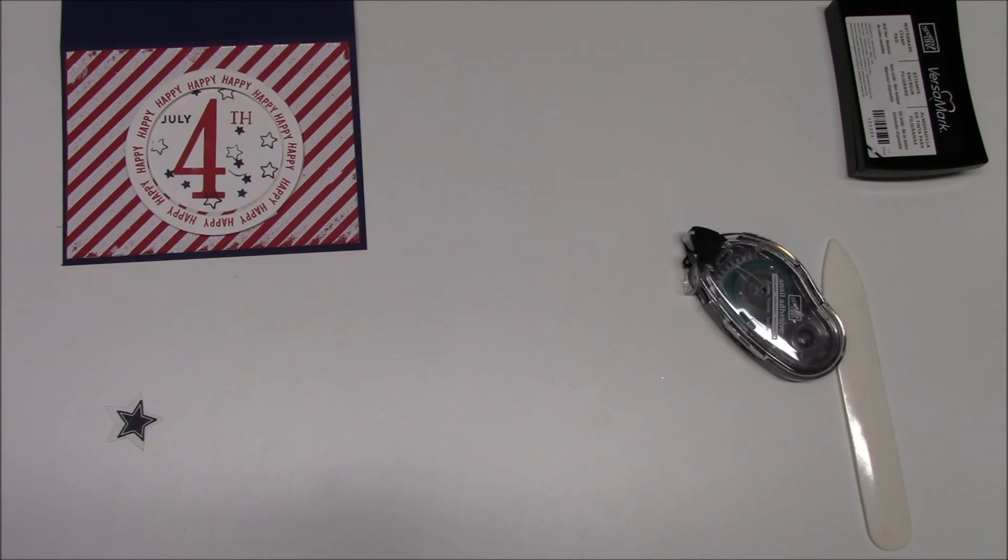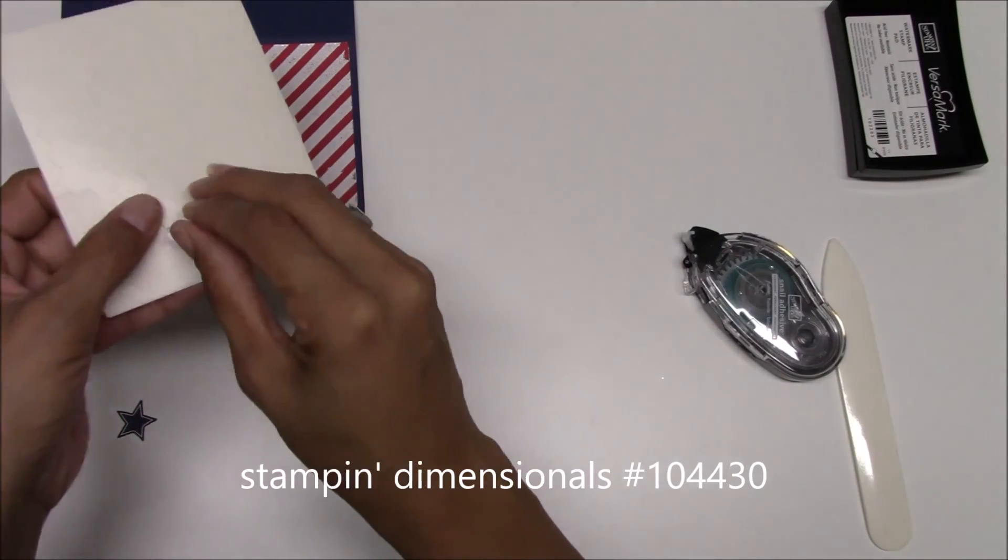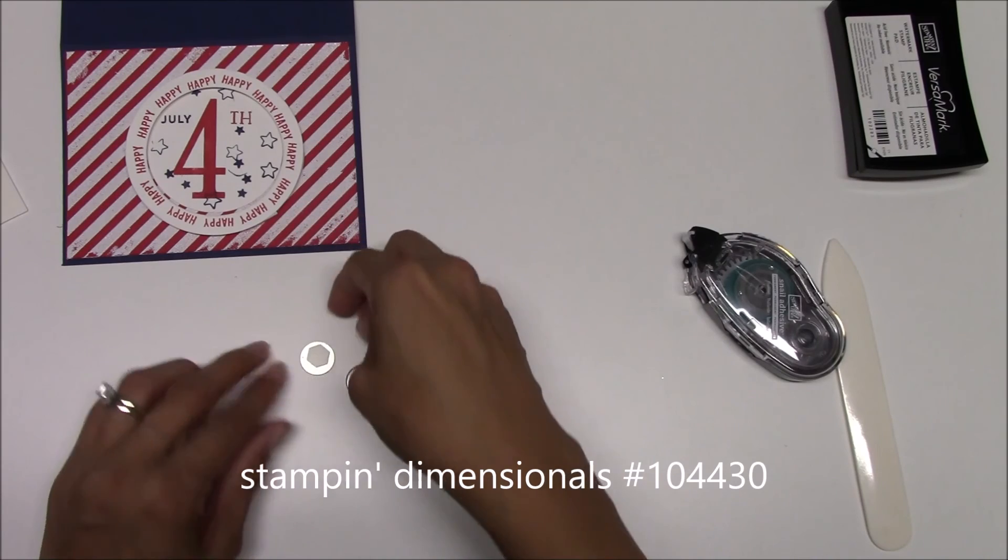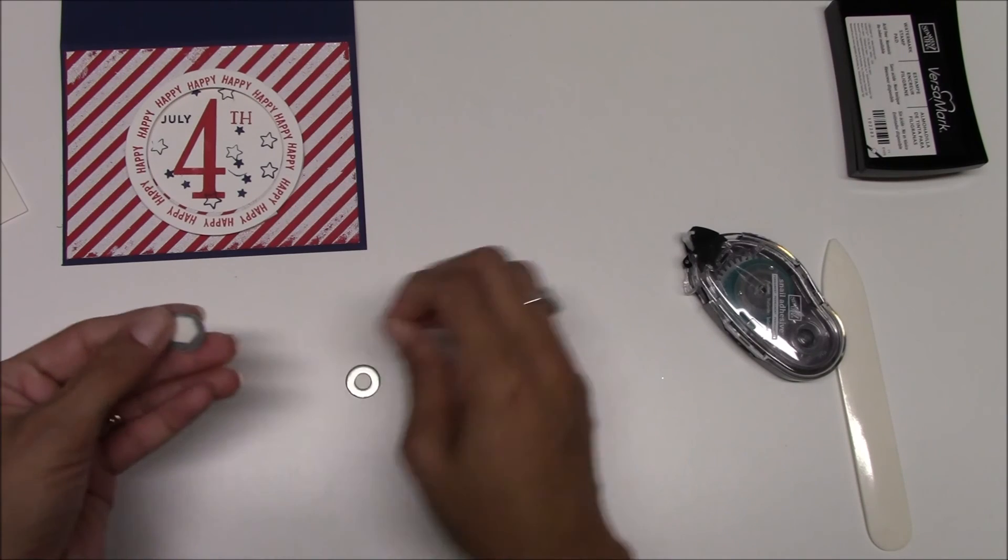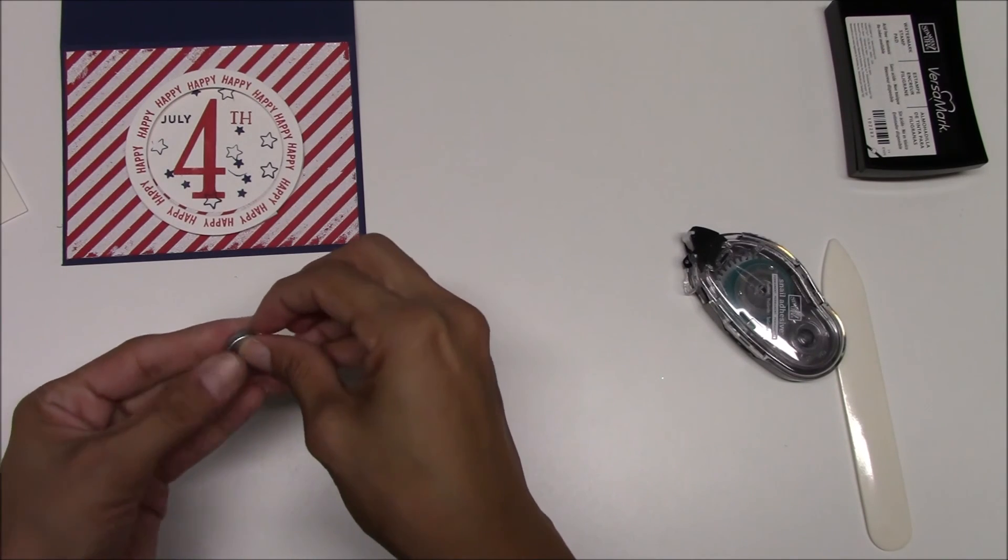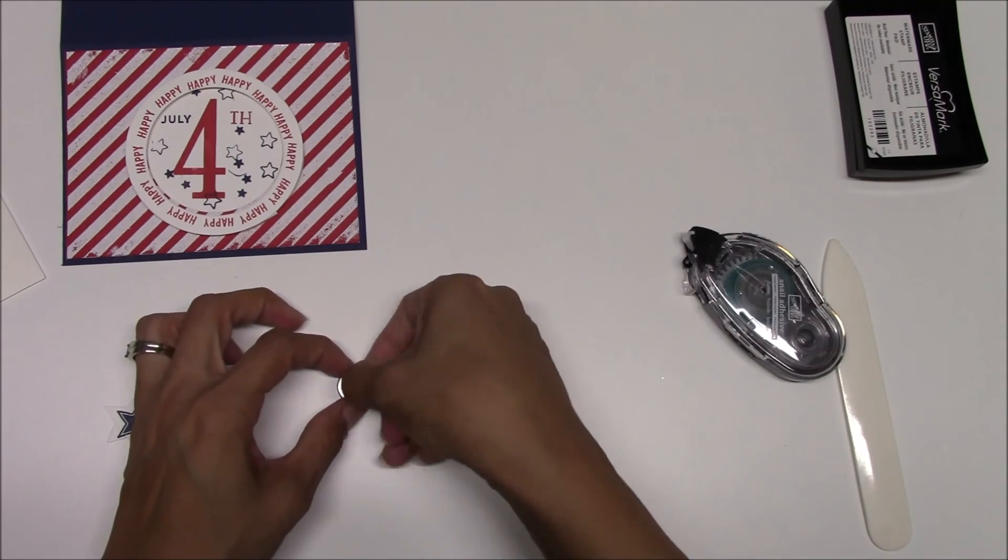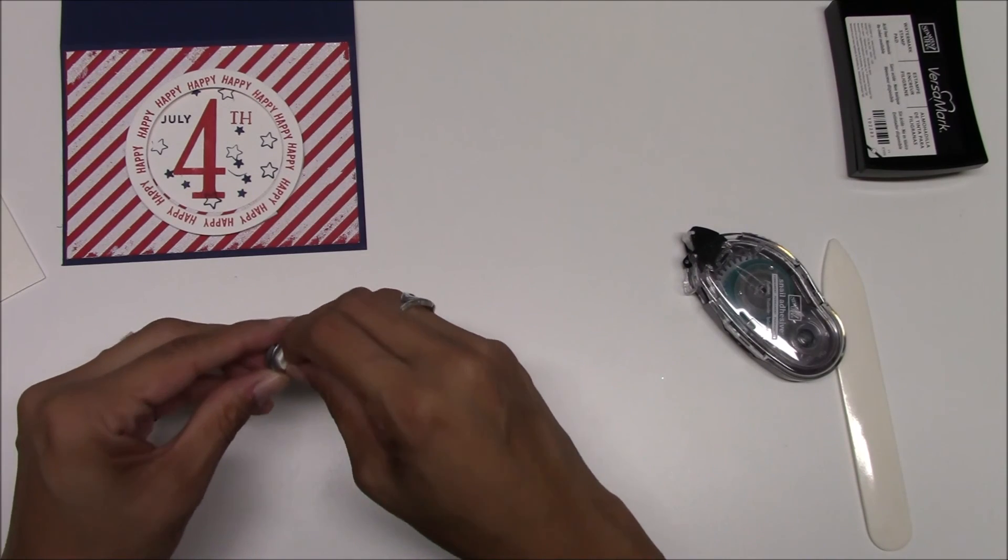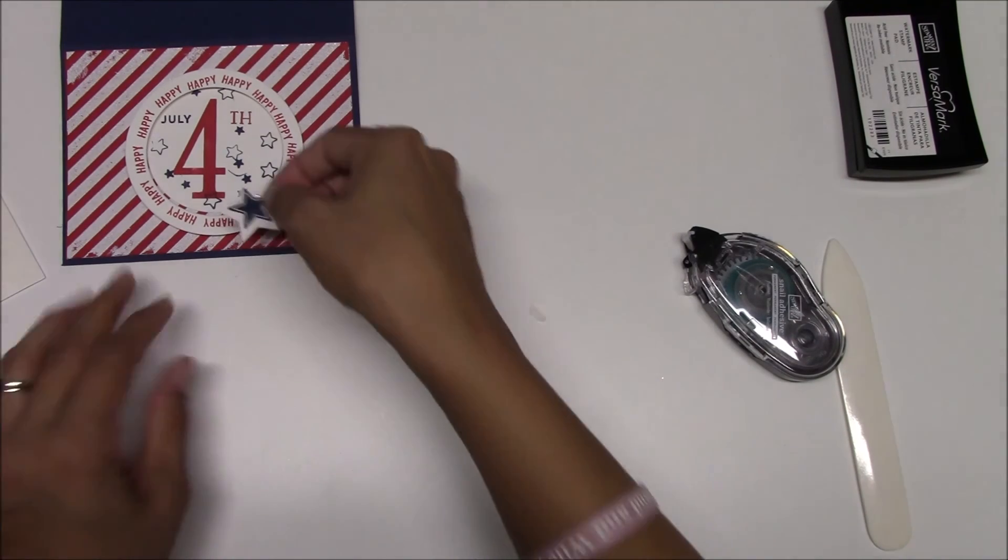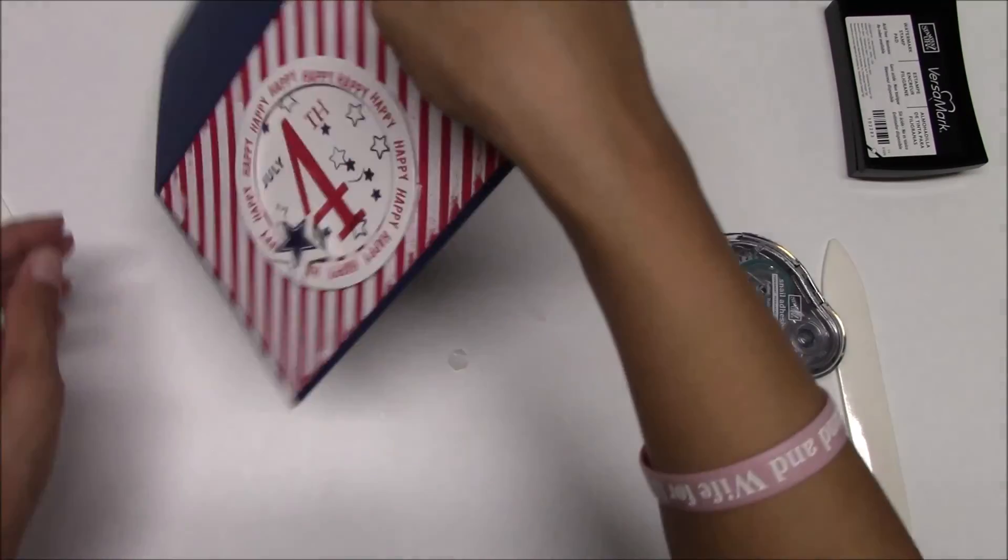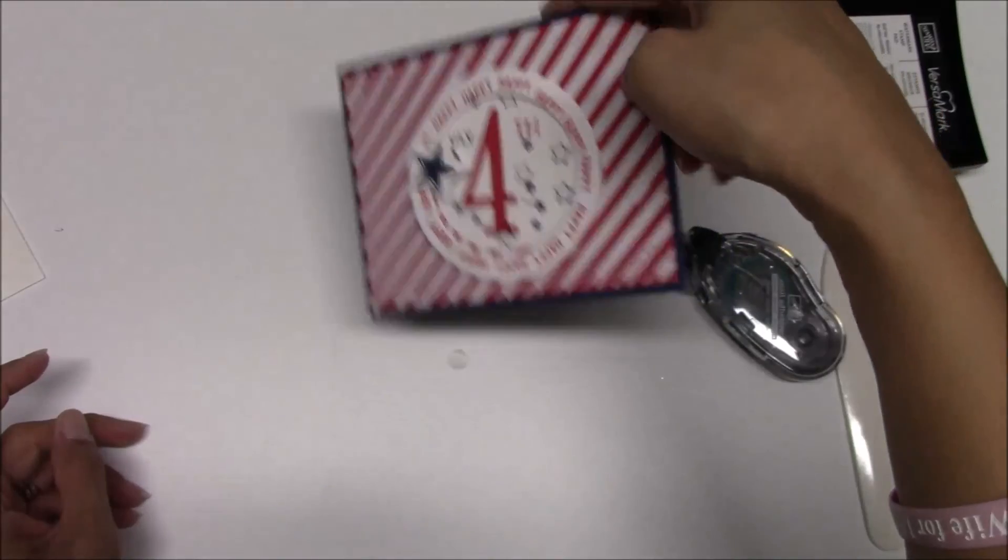Now I'll get two washers and a dimensional. We're going to put the washers together with the dimensional, and another dimensional on top for the star. And there you have it, your 4th of July spinner card.